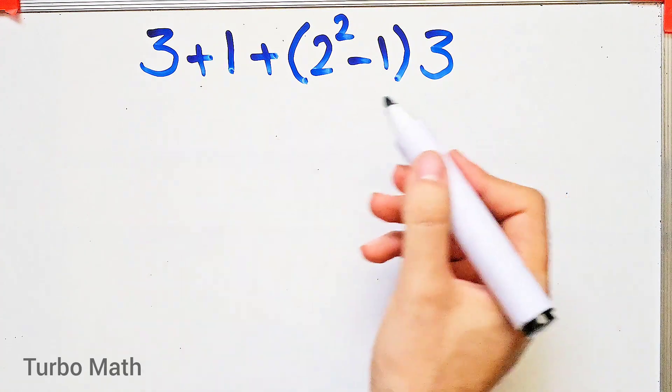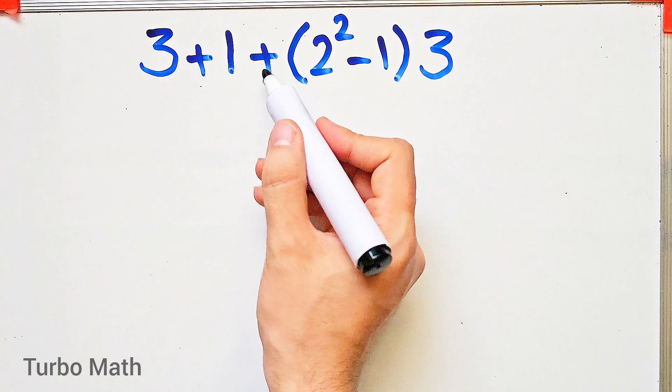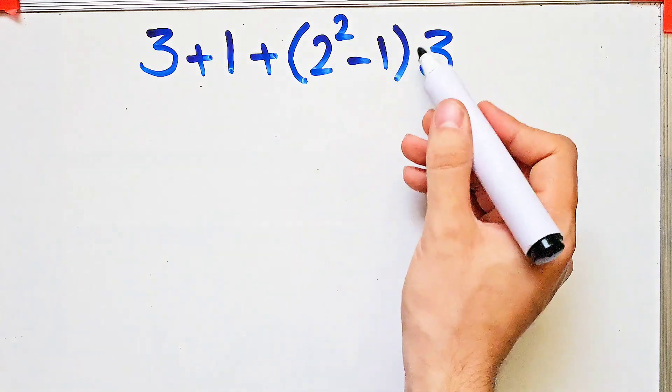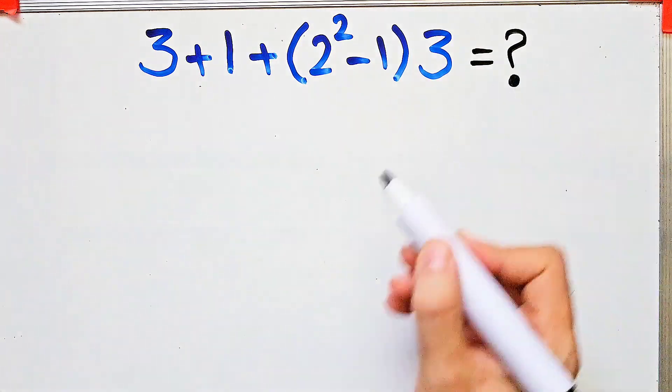Hi friends, welcome to Turbo Math channel. Can you solve this question? Three plus one plus open parentheses two to the power of two minus one closed parentheses then times three. What is the answer of this question? To solve this question we need to follow the order of operations which is PEMDAS.